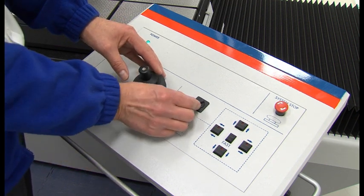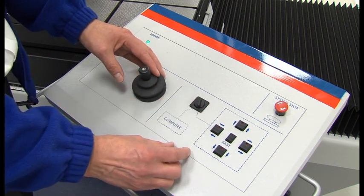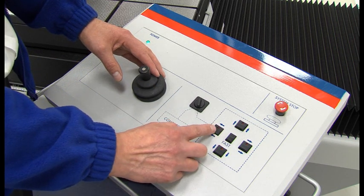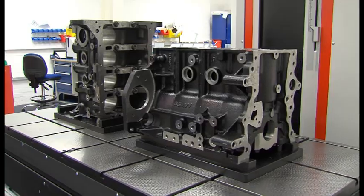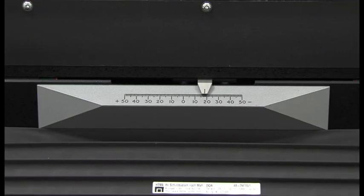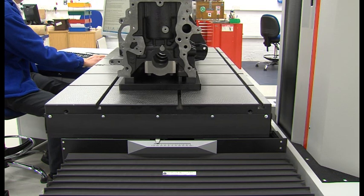All axes of the instrument can be controlled by a PC or through the instrument control panel. The control panel allows precision movement of the XY table, column and radial arm, and aids in initial part setup.